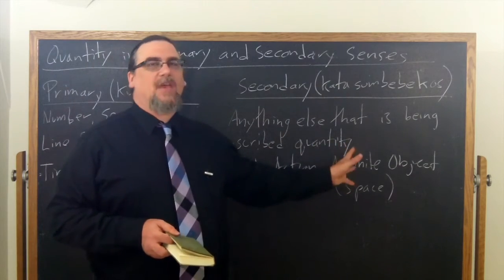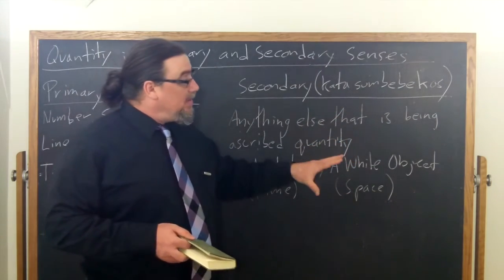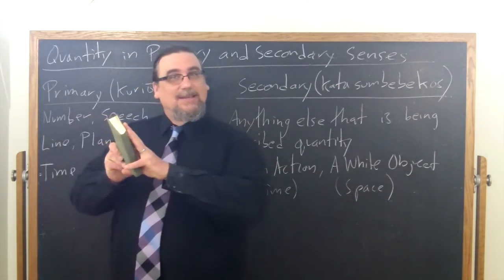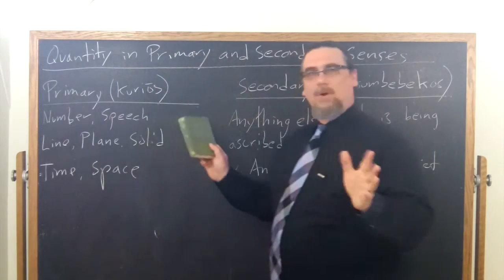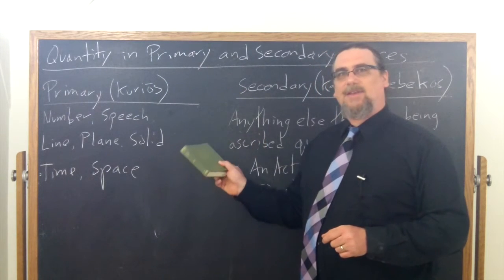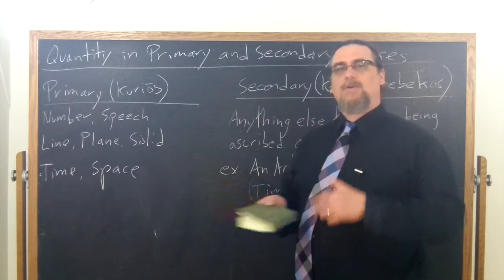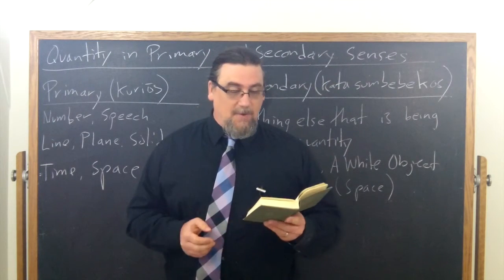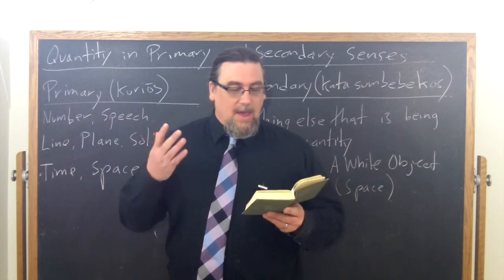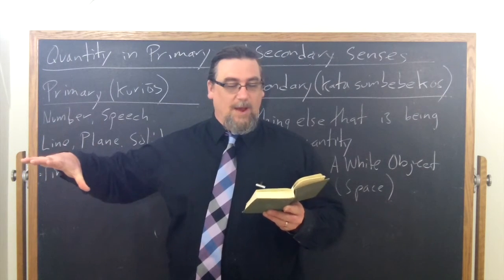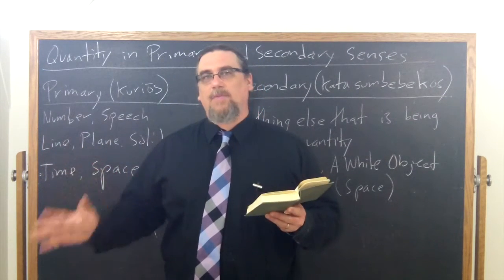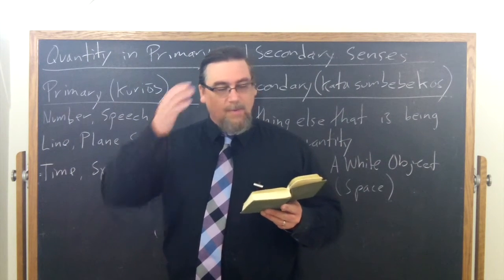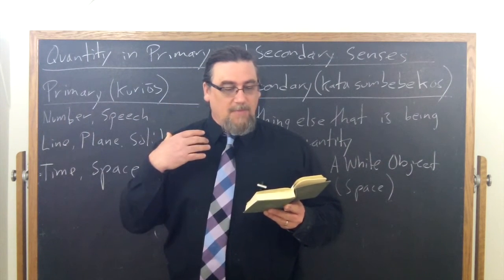And so in this case, an object is in relation to space. But it's the space that really is, according to Aristotle, the quantity in the primary sense. How much space does this thing take up? How much does it cover? So he has, in this case, the surface that this white object, think about like maybe a tarp that we put on the ground. The surface that it covers is large, right?